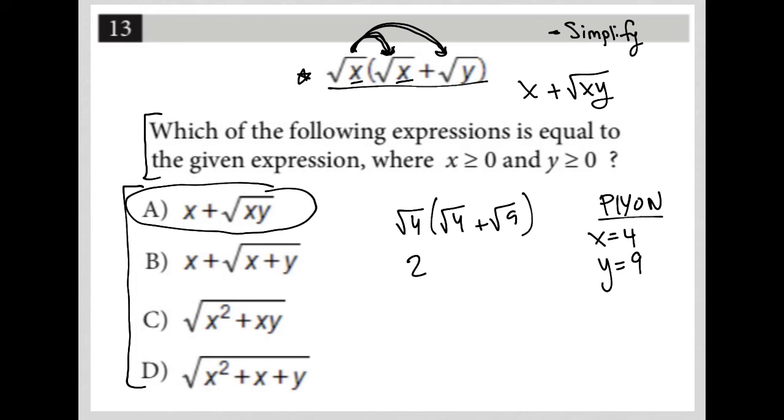Square root 4 is 2. Square root 4 is 2. Square root 9 is 3. 2 plus 3 is 5. And 2 times 5 is 10.